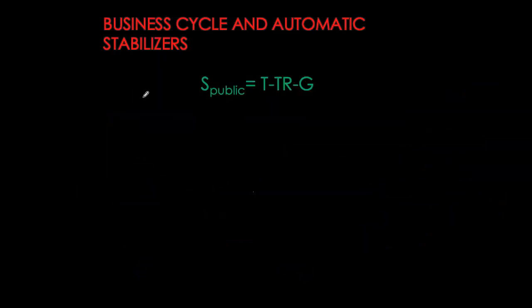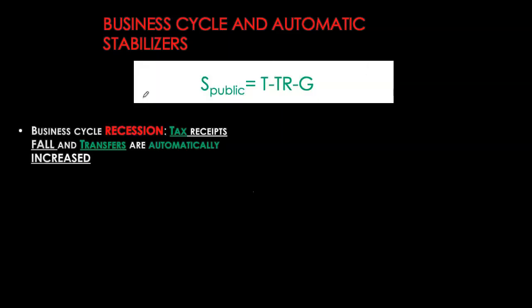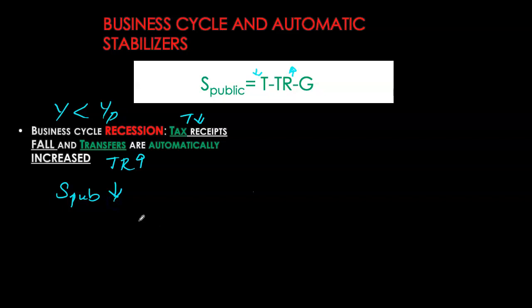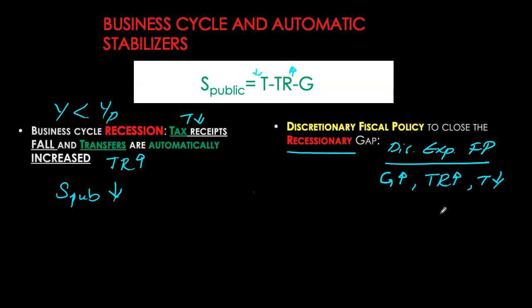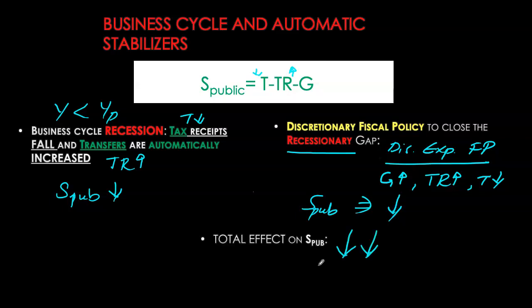Likewise, if the economy is in a recession with no deliberate changes in fiscal policy, only automatic stabilizers respond. In the recession, tax receipts automatically go down and transfers automatically go up, so public savings move towards a deficit. If the government then uses discretionary expansionary fiscal policy — increasing government purchases, transfers, or reducing taxes — any of these measures put further downward pressure on public savings. Overall, public savings are smaller during recessions, or deficits tend to become bigger during recessions. The total effect on budget balance can be split into the effect from automatic stabilization and the effect from discretionary fiscal policy.